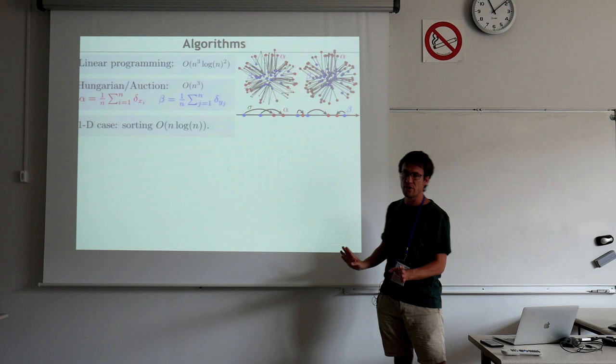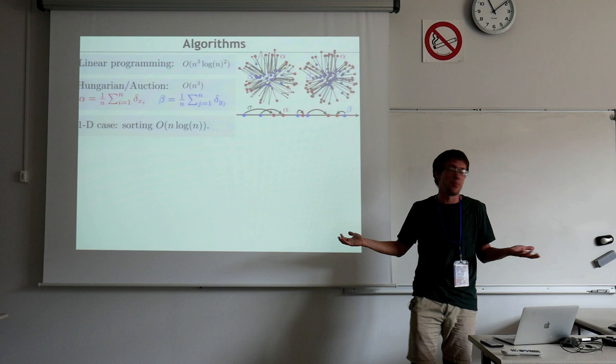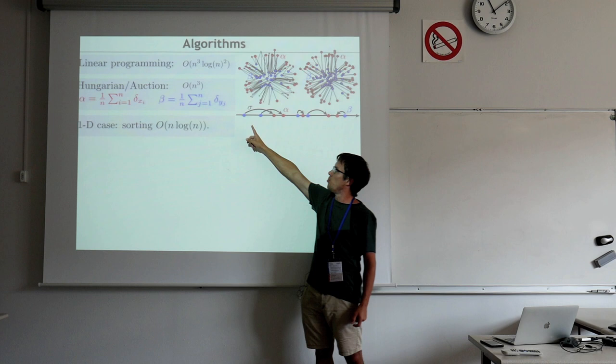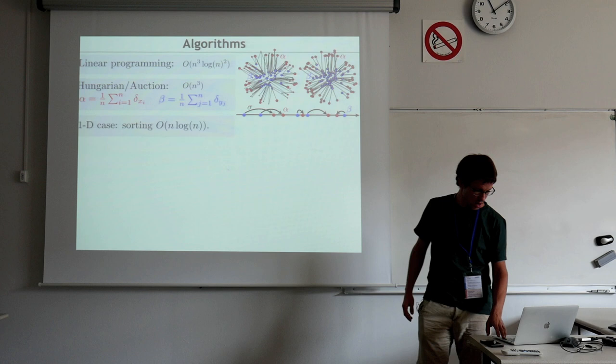There is also a trivial situation: the 1D case. In 1D, optimal transport is called the monotone rearrangement — the optimal transport is just an increasing map between two sets of points, and there is a single increasing map. You sort the blue points left to right, the red points left to right, and transport the i-th blue point to the i-th red point. So in 1D, optimal transport is O(n log n) and you probably don't need advanced software.